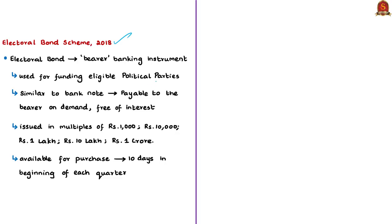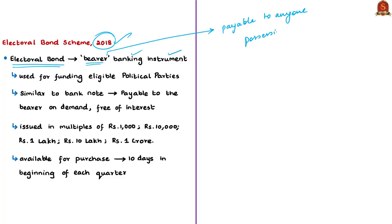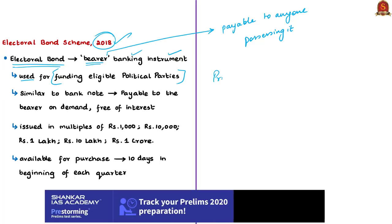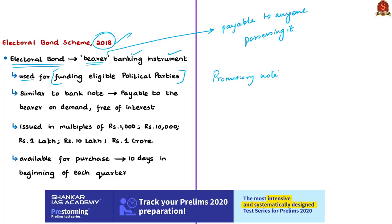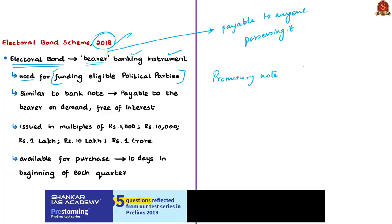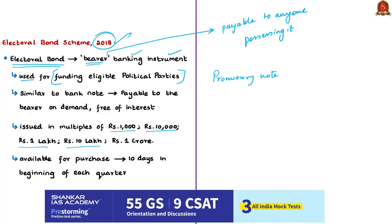The government notified this electoral bond scheme in the year 2018. An electoral bond is a bearer banking instrument. A bearer instrument refers to an instrument that is payable to anyone who is possessing it, and it is a negotiable instrument — a signed document that promises a sum of payment to a specified person or the assignee. Electoral bonds are used for funding eligible political parties and are designed to be bearer instruments like a promissory note, similar to a bank note payable to the bearer on demand and free of interest. These bonds will be issued in multiples of 1,000, 10,000, 1 lakh, 10 lakh and 1 crore rupees.